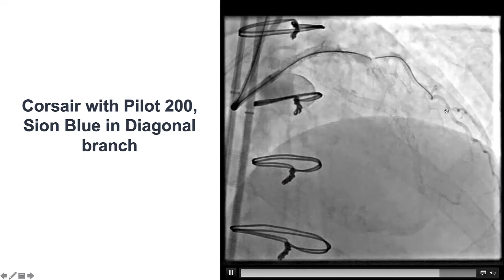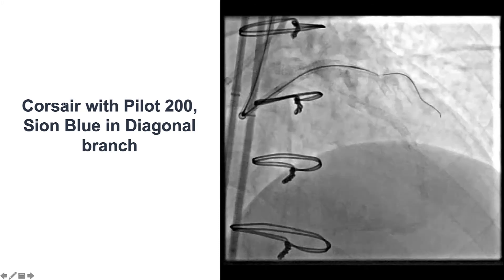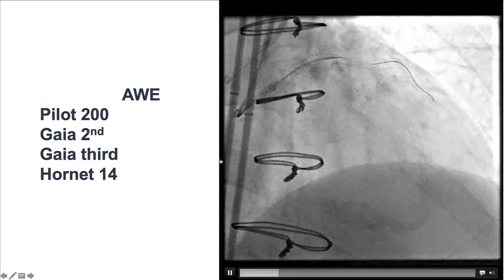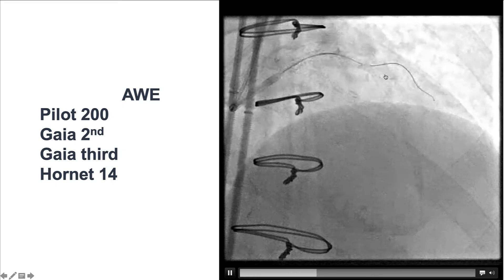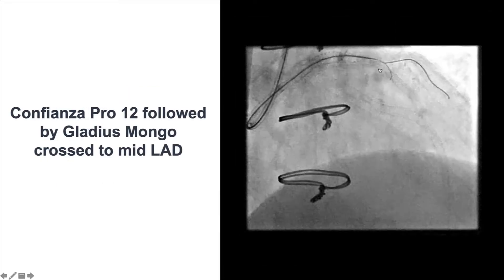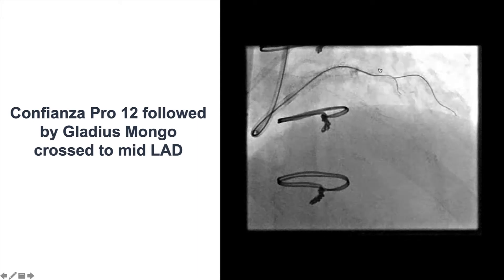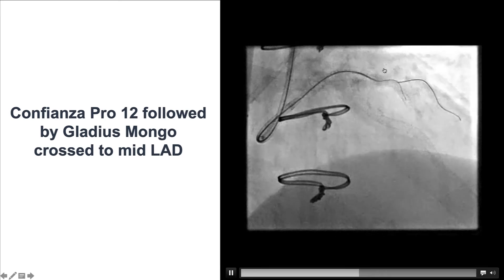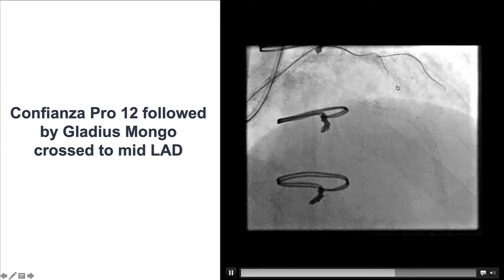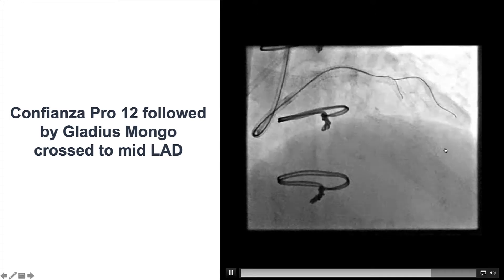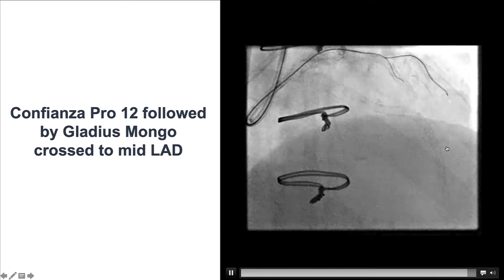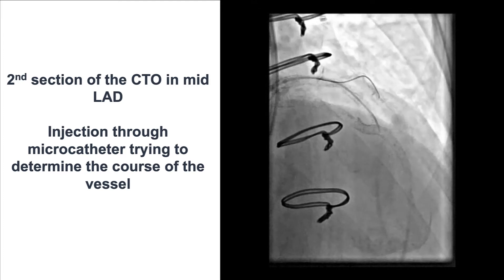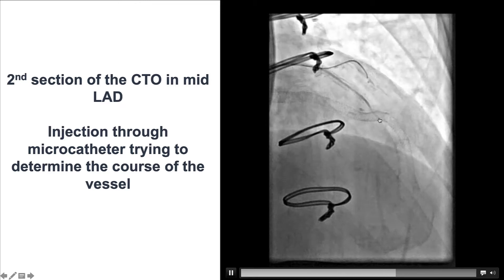We inserted a safety wire in the diagonal branch and performed antegrade wire escalation using a Corsair. Multiple guide wires were used: Pilot 200, Gaia 2nd, Gaia 3rd, and Hornet 14. Advancing guide wires through the previously placed stents was very challenging. Eventually, using a Confianza Pro 12, we were able to partially penetrate into the old stent, advance our microcatheter, and then use a Gladius Mongo to advance further down toward the LAD. We inserted our Corsair to the mid-LAD and performed injection through the tip of the Corsair, but that was not very useful — we could not determine the course of the vessel from this injection.